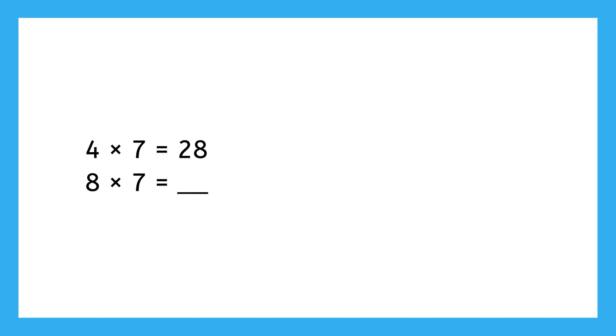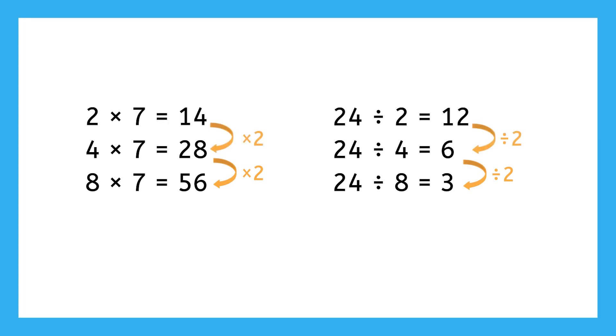With Grandpa Nate, we learned that knowing our 4s means we can double our products to help us multiply by 8, or split our quotient in half to help us divide by 8. And we learned that if we're not quite sure about our 4s, we can also use our 2s. That's because 2, 4, and 8 share a double and half relationship. Doubling 2 equals 4, while doubling 4 equals 8. And splitting 8 in half equals 4, while splitting 4 in half equals 2.